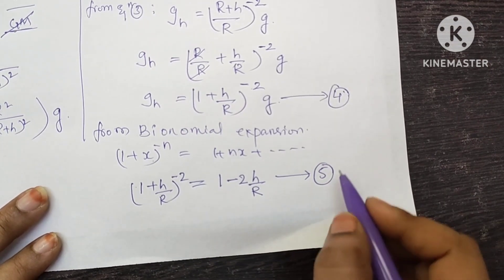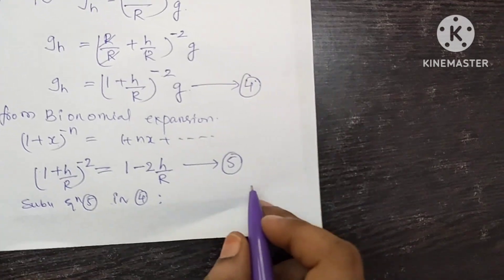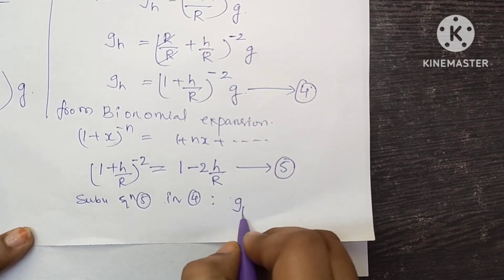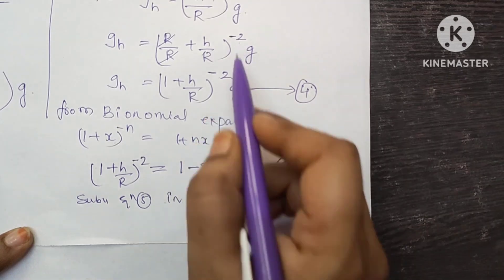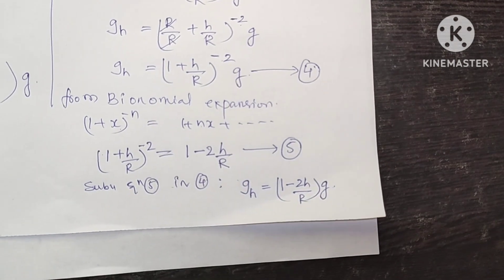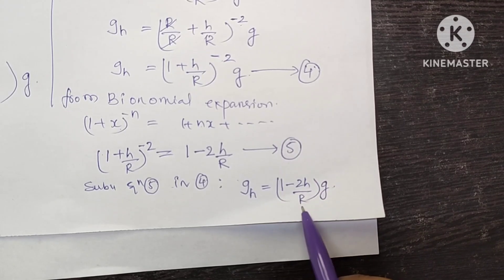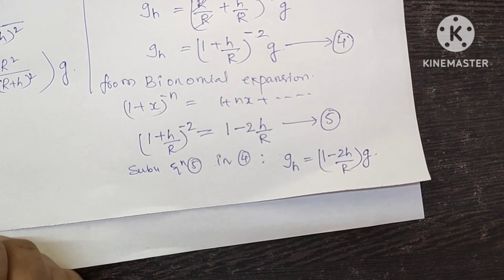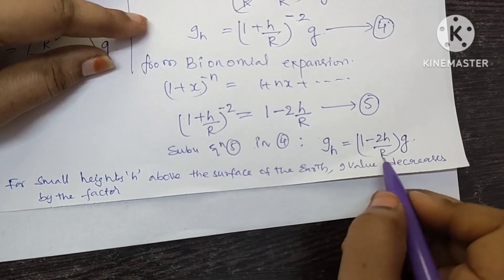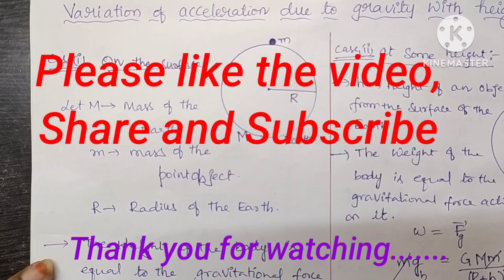Substituting equation 5 into equation 4, we get g_H = (1 - 2H/R) × G. So for small heights H above the surface of the Earth, the value of acceleration due to gravity decreases by the factor (1 - 2H/R). I hope this is clear to you. Please like the video, share it with your friends, and don't forget to subscribe to the channel. Thank you for watching.